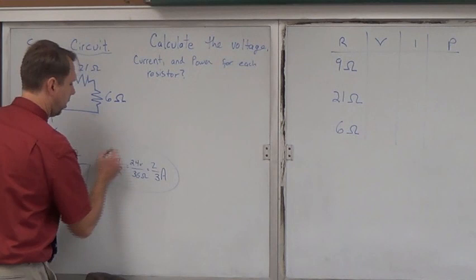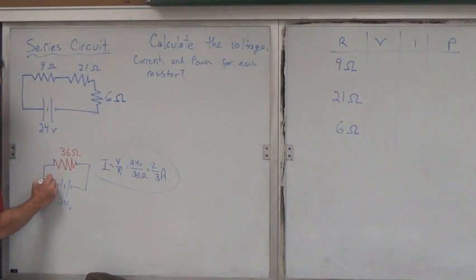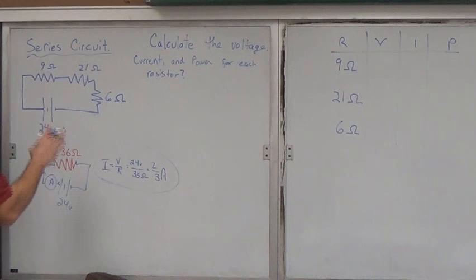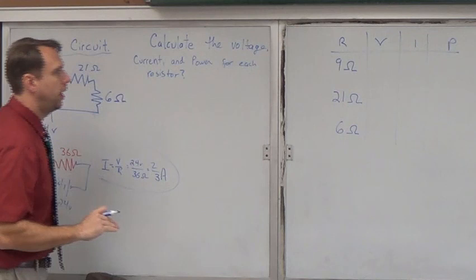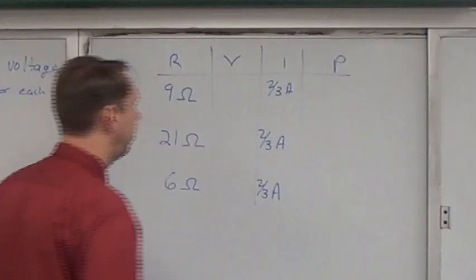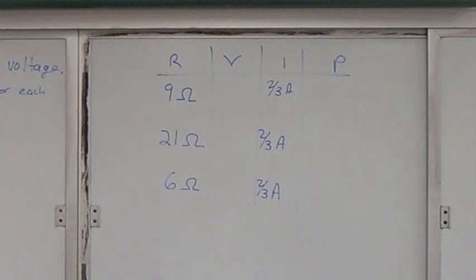Now, here's the beauty. Now I know the current coming out of the battery. It's going to be 2 thirds of an amp coming out. And I can view this current coming out through the 36 ohms. But, because it's in series, what stays the same? The current does. So I'm going to have 2 thirds of an amp here, 2 thirds of an amp everywhere. So I can come over to this chart, and I know that I have 2 thirds of an amp for every one of those resistors, because the current has to stay the same in series.